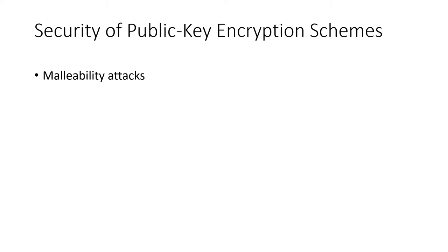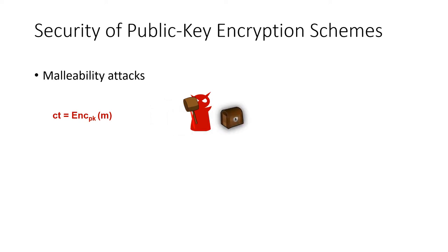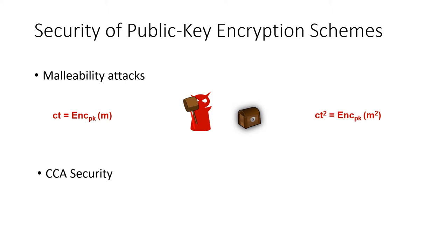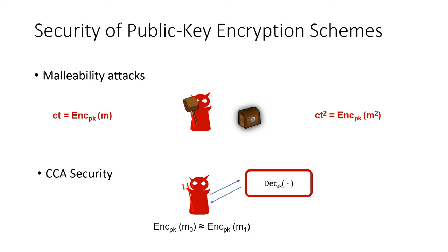Schemes satisfying the notion of CPA security suffer from malleability attacks, where an adversary can obtain a ciphertext and modify it to obtain an encryption of a related plaintext. To defend against such attacks, public key encryption schemes are now typically required to satisfy the stronger notion of CCA security. Here, an adversary cannot distinguish encryptions of two plaintexts, even given access to a decryption oracle that decrypts all possible related ciphertexts.